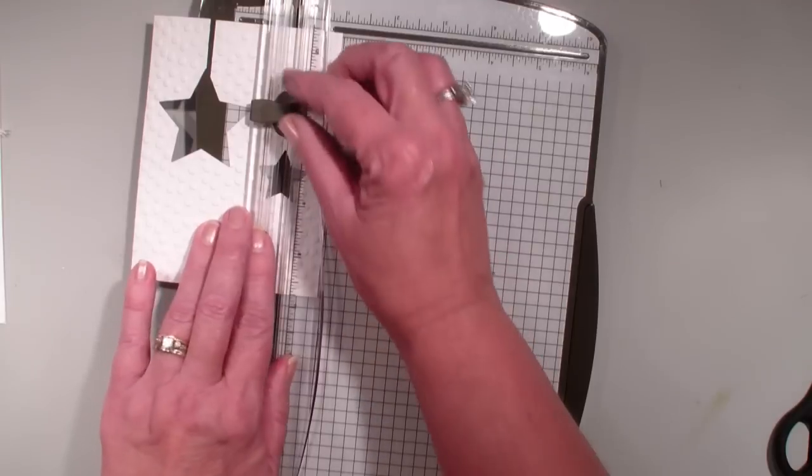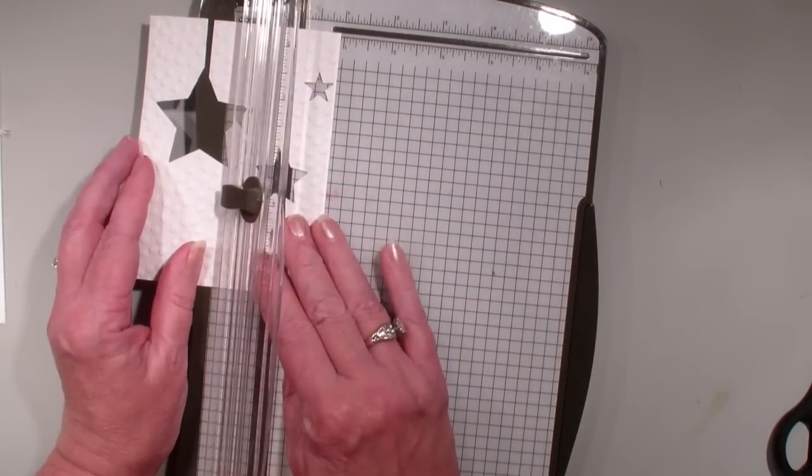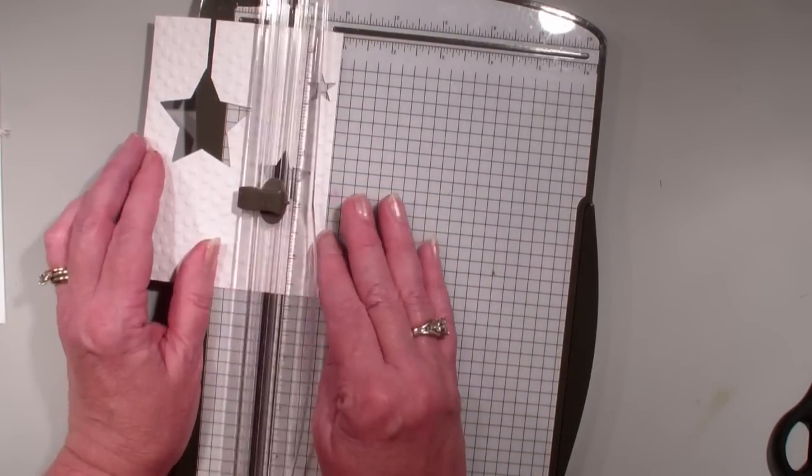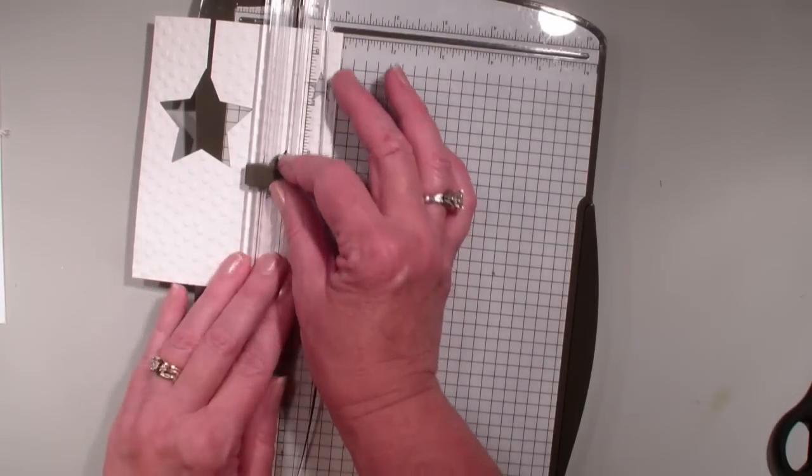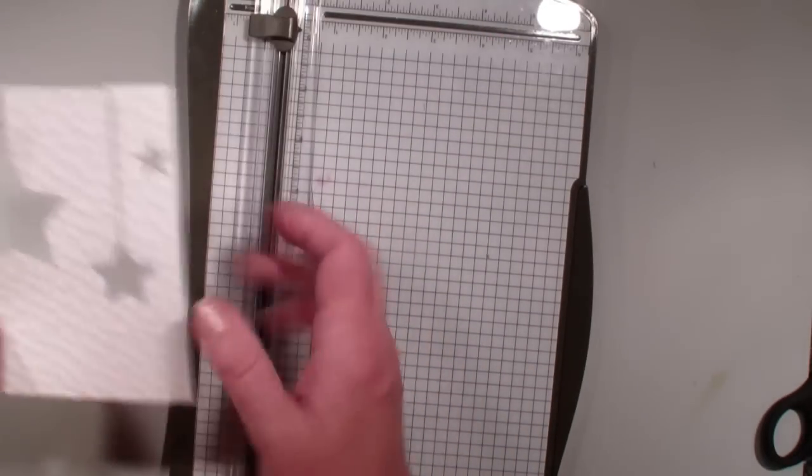Again, just lining up the tip of the star in the channel and then just moving it over just a fraction of an inch. I don't know what the size that is, but not quite an eighth of an inch.